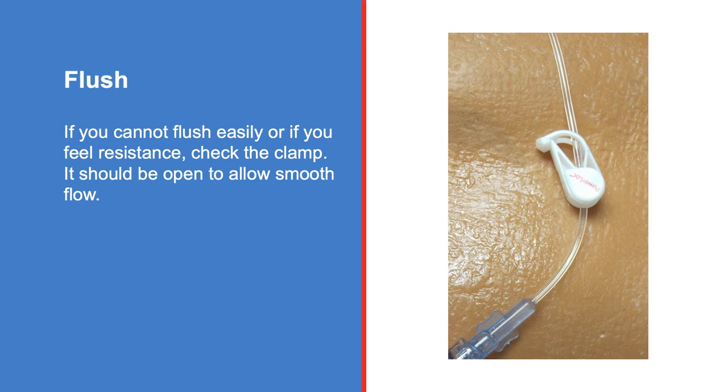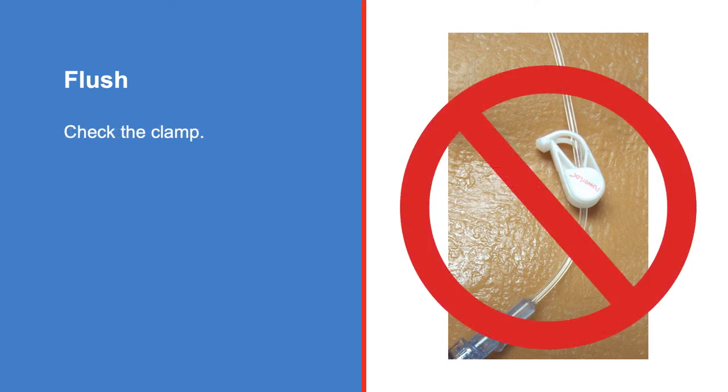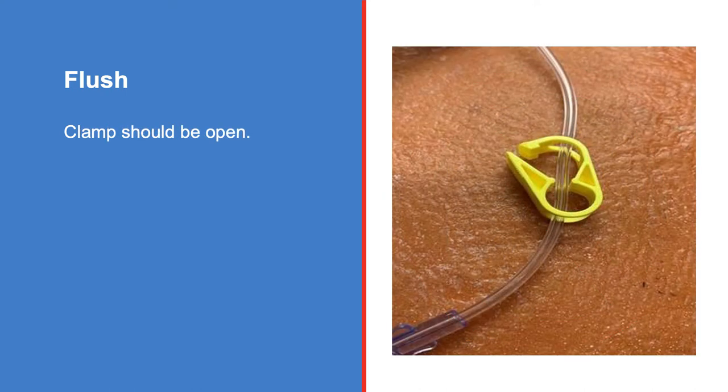If you cannot flush easily or if you feel resistance, check the clamp. It should be open to allow smooth flow. This is what the clamp looks like when it is closed. This is what the clamp looks like when it is open.